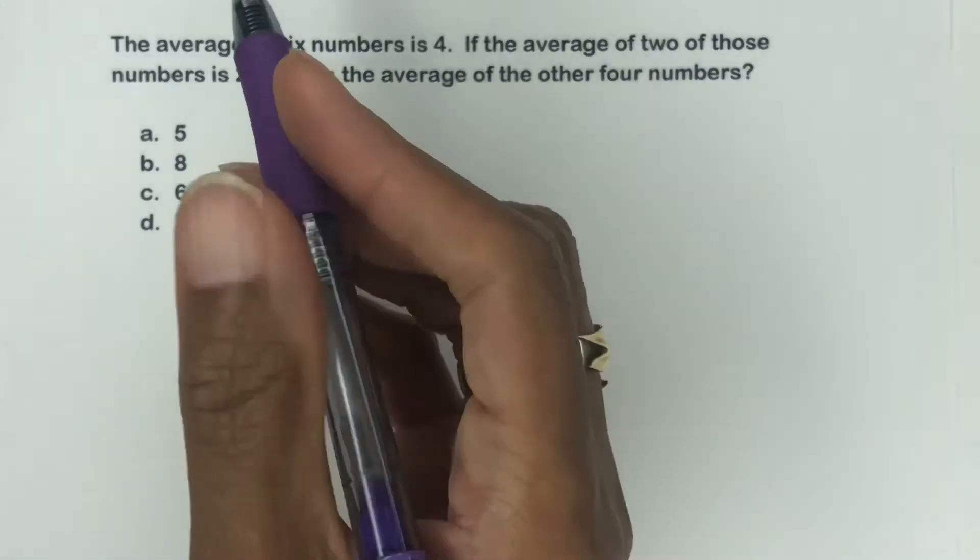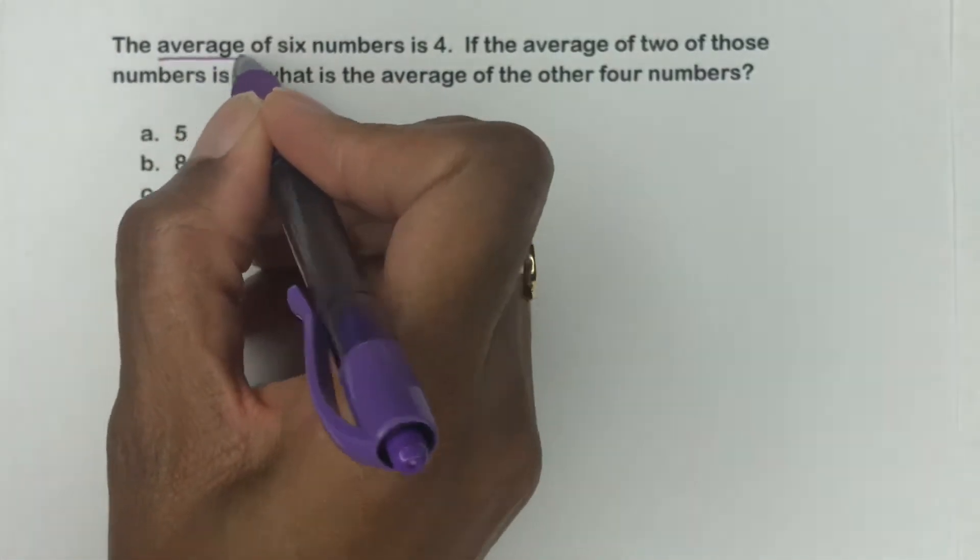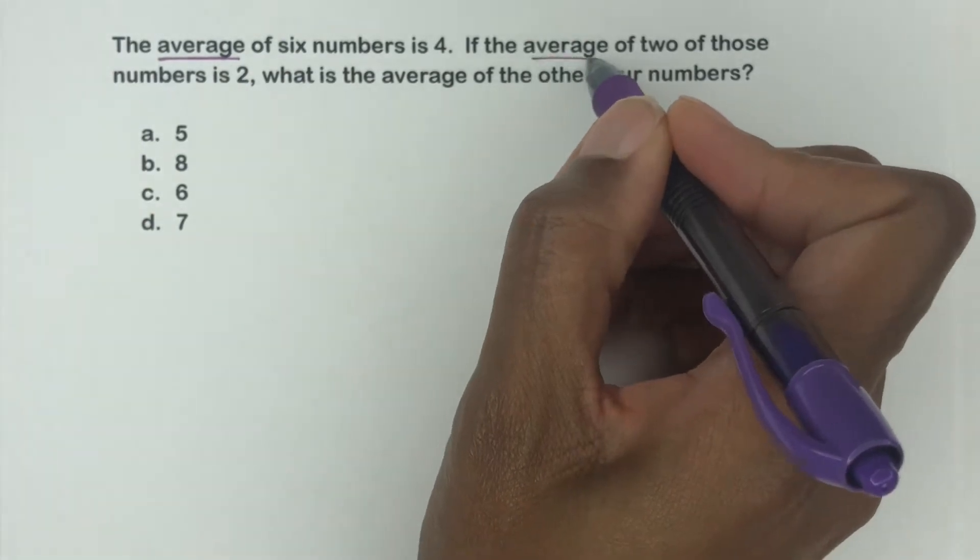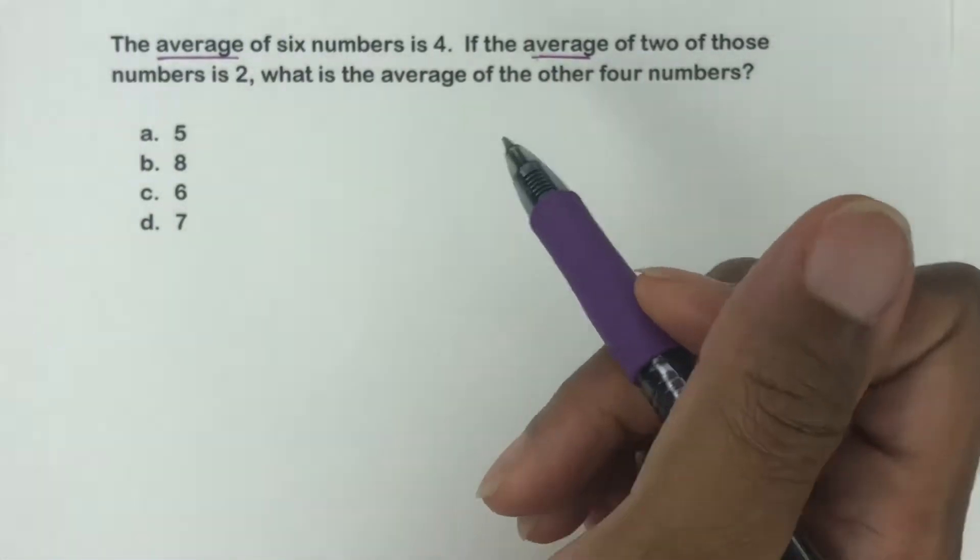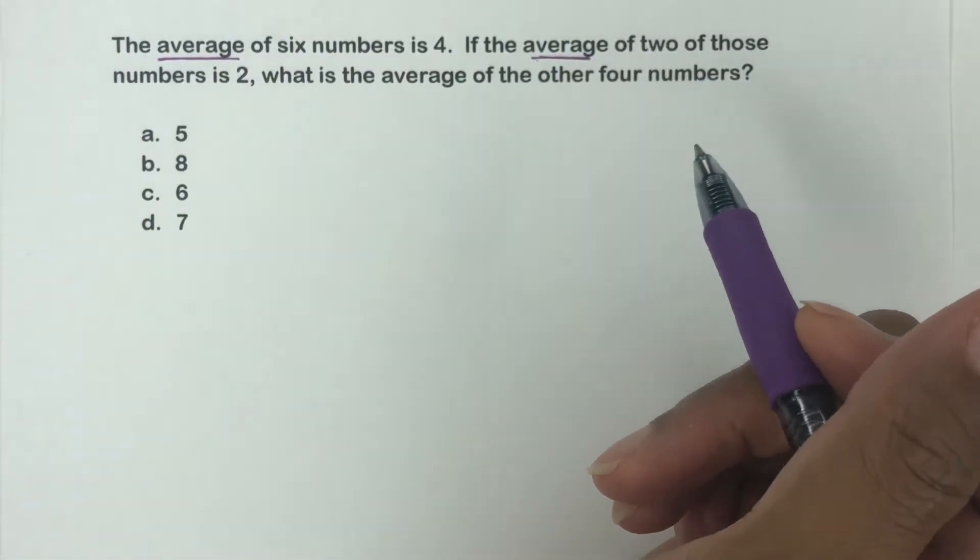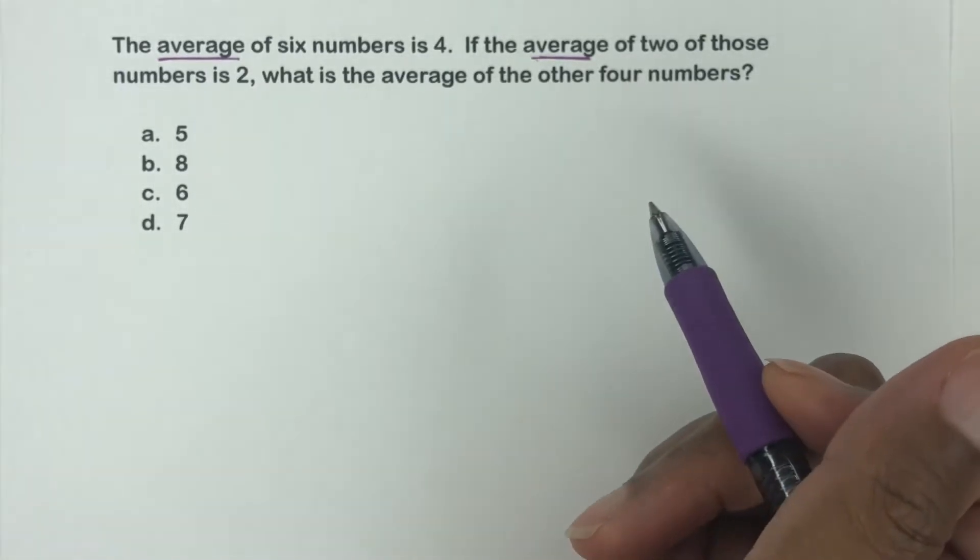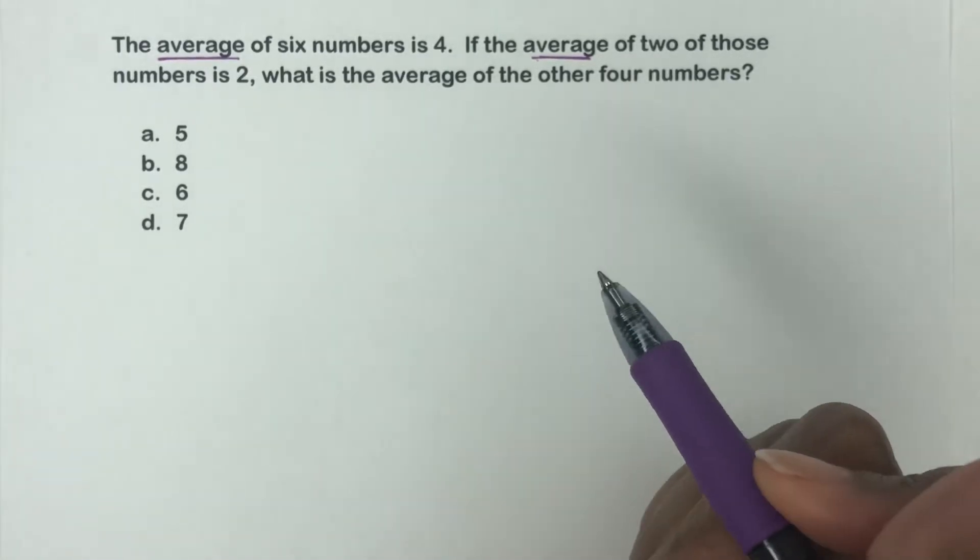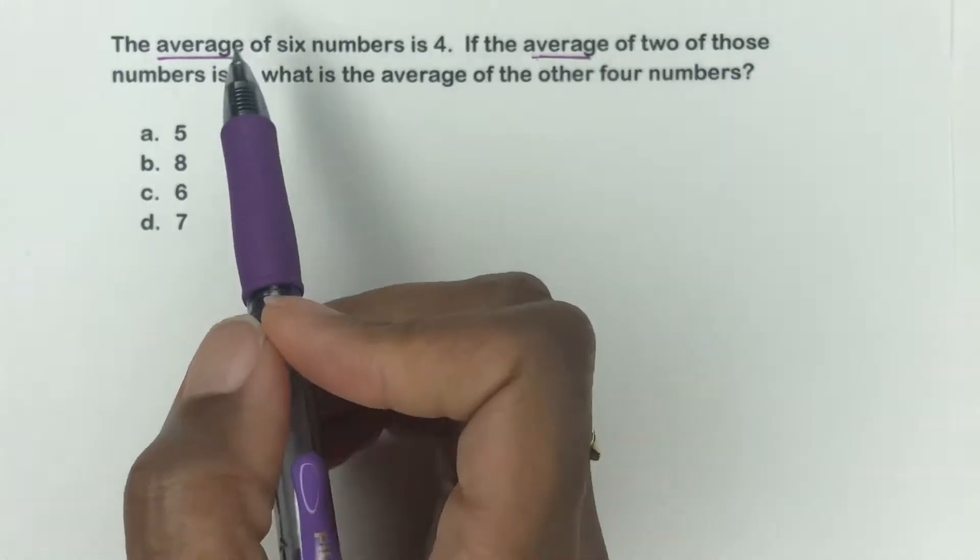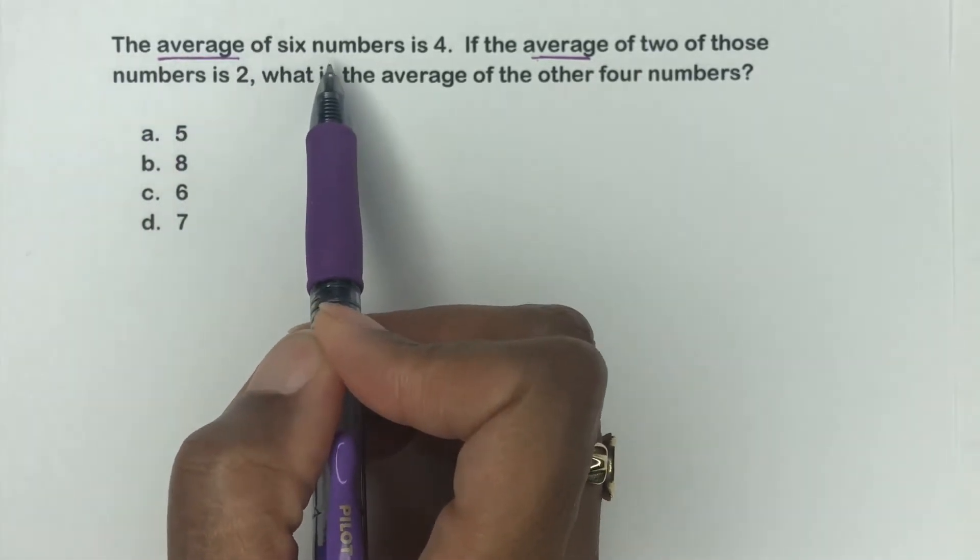So the first thing to do is, let's underline. So what is average? So average is when you add numbers up and then you divide it by how many numbers there are. That's the average, that's how you find average. So let's take the first sentence. The average of six numbers is four.